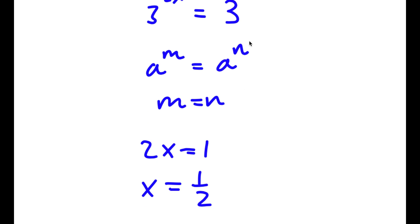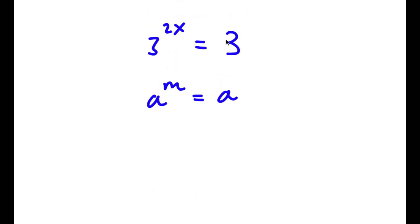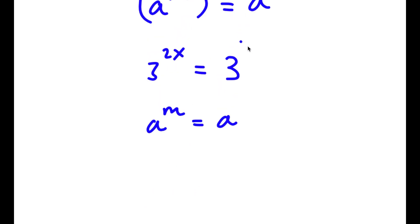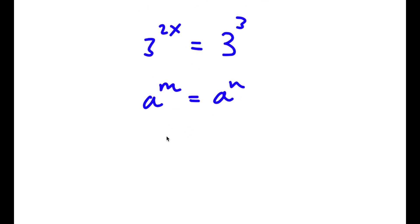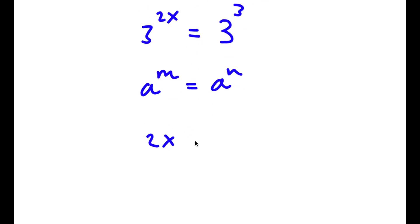Actually, this isn't 3 to the power of 1 — this is 3 to the power of 3. So 2x is equal to 3, meaning x is 3 over 2, not 1 half.